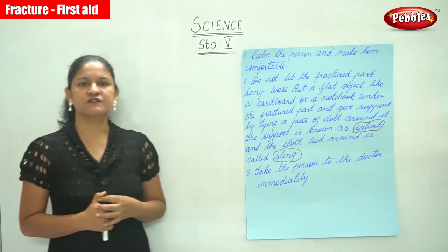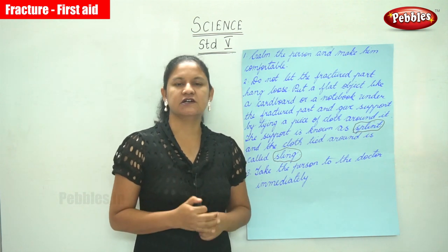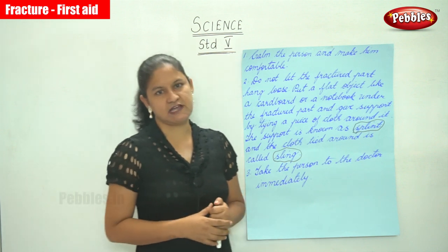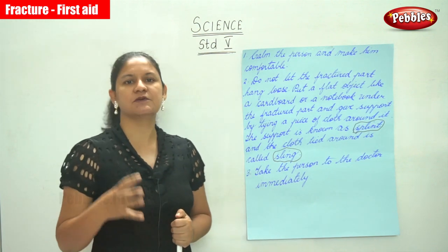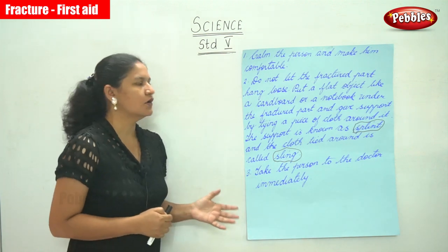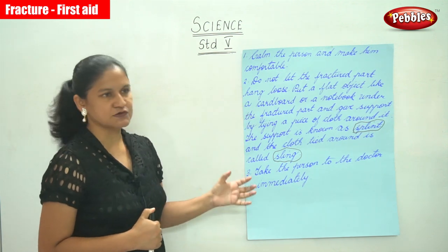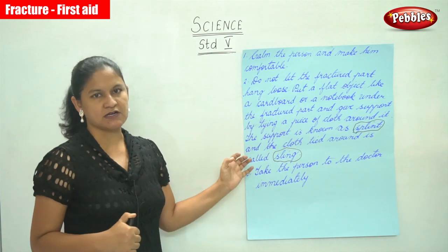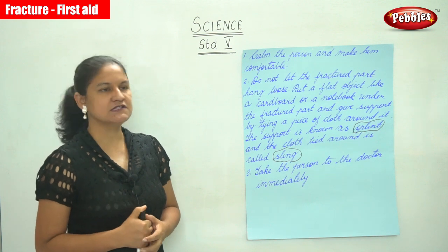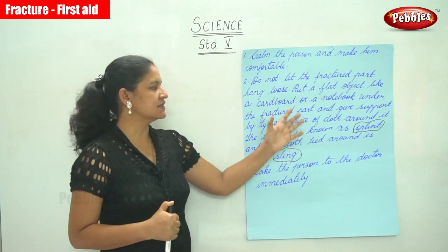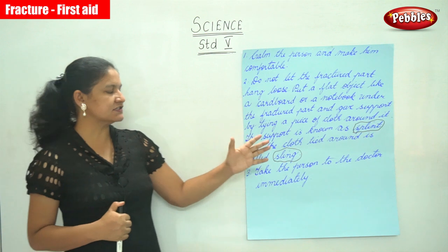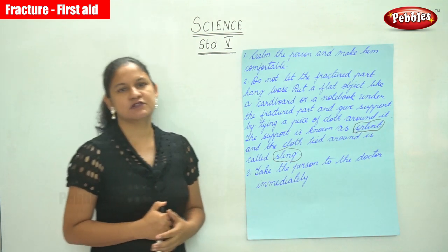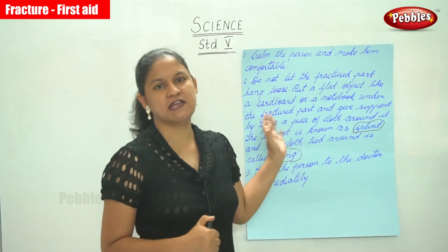In summary, the first aid steps in case of a fracture: a fracture is a crack or a break in the bone. Step one — keep the person calm and comfortable. Step two — do not allow the fractured part to hang loose; place a flat object like cardboard or a notebook under it and give support by tying a piece of cloth around it. The support is the splint and the cloth is the sling. Step three — take the person to the doctor immediately. These are all the first aid steps to follow in the case of a fracture.